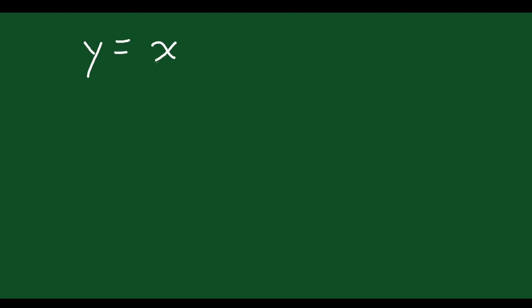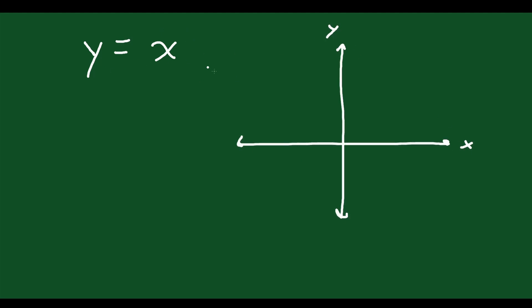What do we mean when we talk about domain and range of a function? Let's take a simple example first. Let's say we just have y equals x. We all remember what this looks like if we were trying to graph it. You have your xy axes, and y equals x is just a diagonal line — slope of one, so it goes up one over one. It's a perfect diagonal.